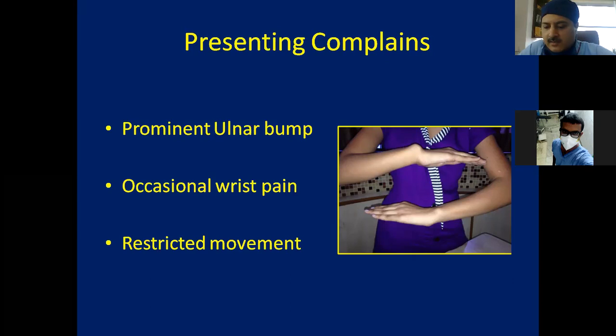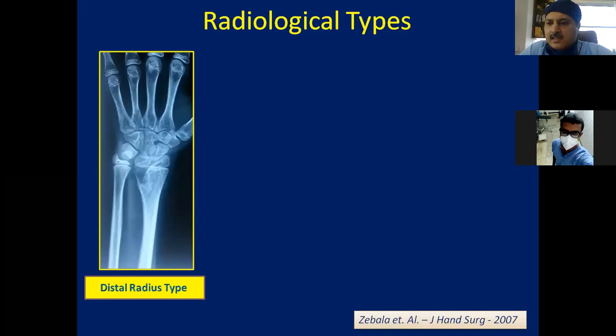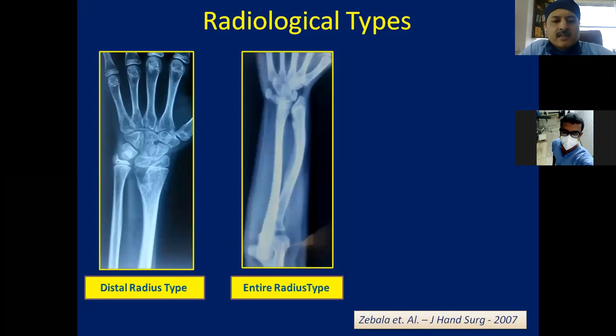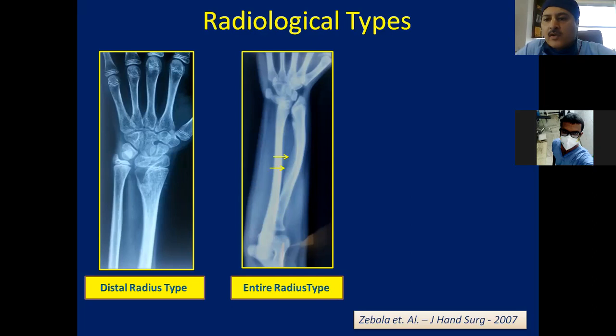There are radiological types of Madelung disease described by Zabala, published in the Journal of Hand Surgery. The first is the typical distal radius type — changes in the distal radial metaphysis with no other skeletal change. The second is the entire radius type, more associated with skeletal dysplasia or Leri-Weill dyschondrosteosis, showing periosteal reaction and bone formation along the interosseous membrane along the radial diaphysis. The radiocapitate distance is typically more than 4 millimeters in this type.